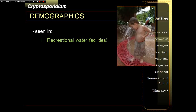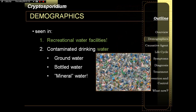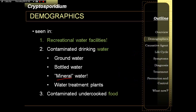The most common sources would be jacuzzis and swimming pools, even chlorinated ones, because cryptosporidium is highly resistant to chlorine. Drinking water is also a source, including bottled mineral water. Epidemics can come from water treatment plants, and food washed with contaminated water would also contain cryptosporidium.